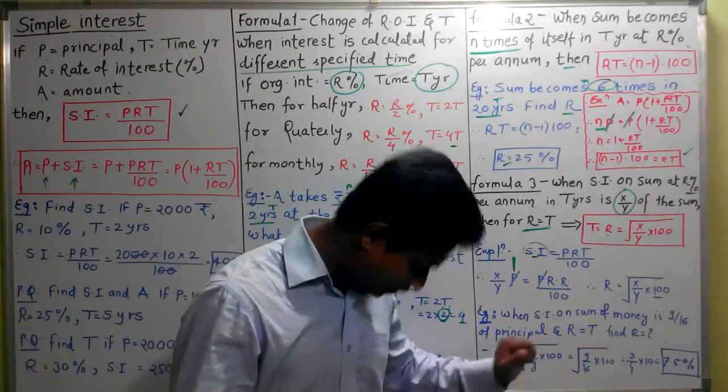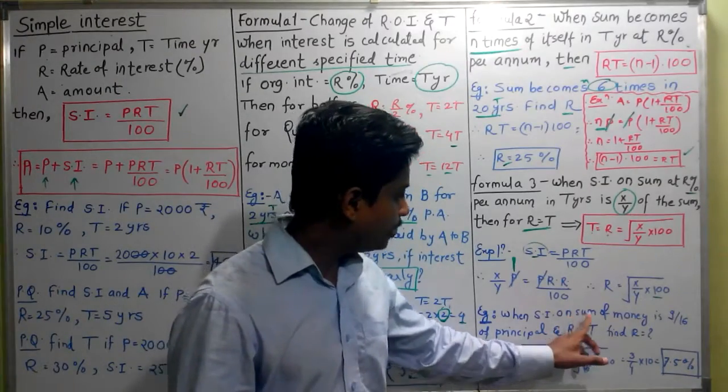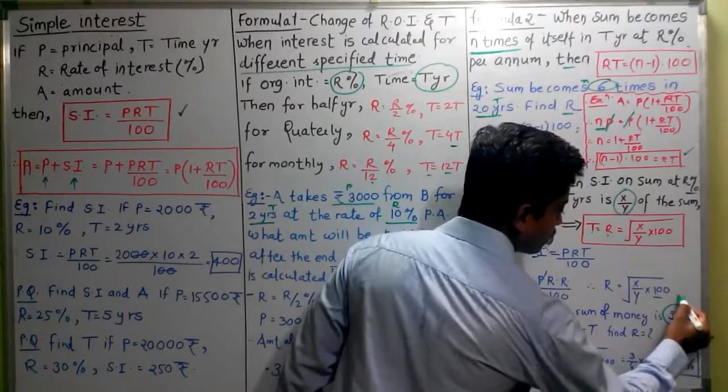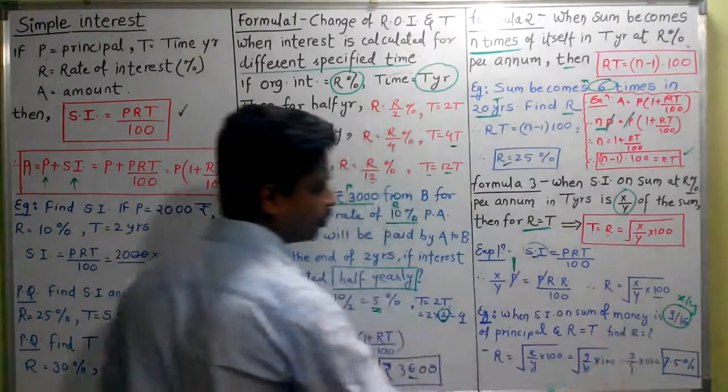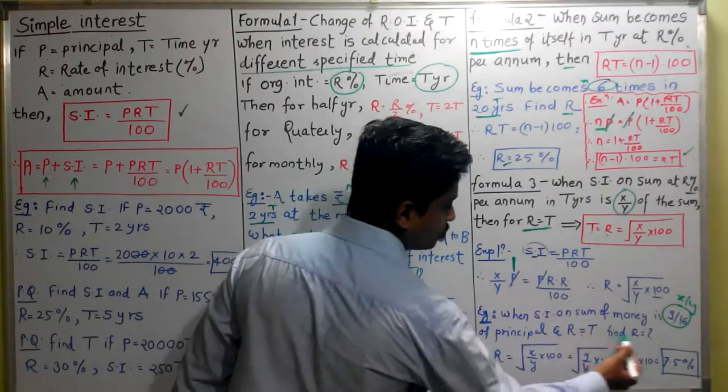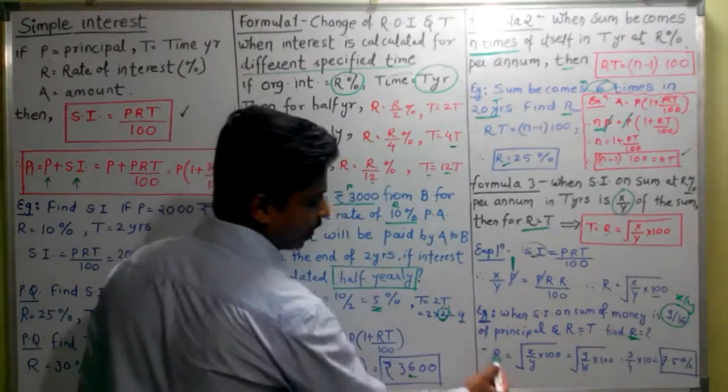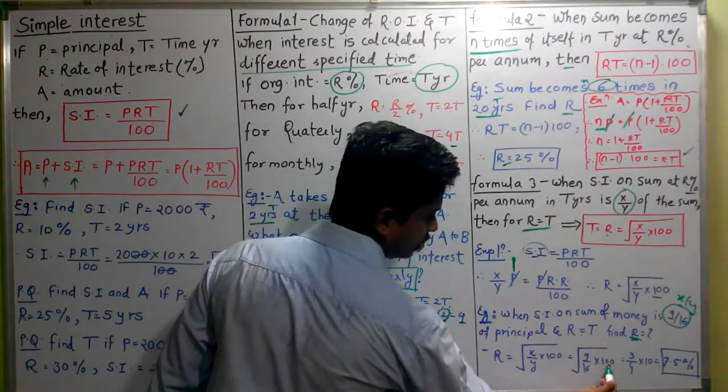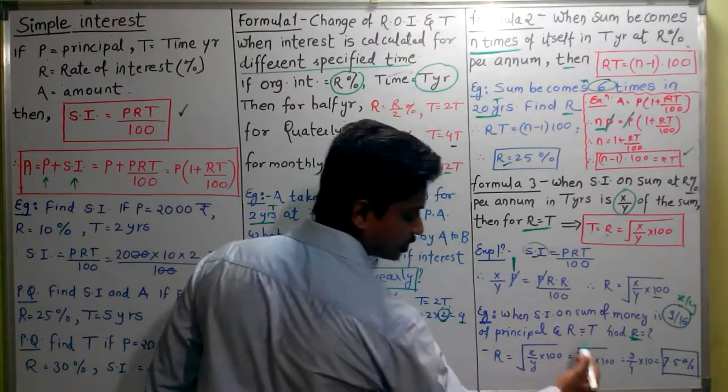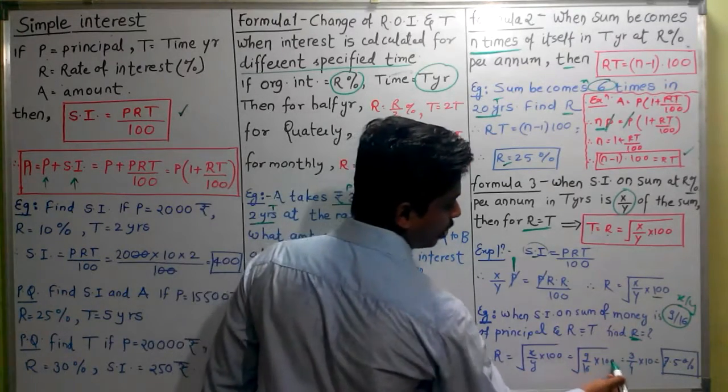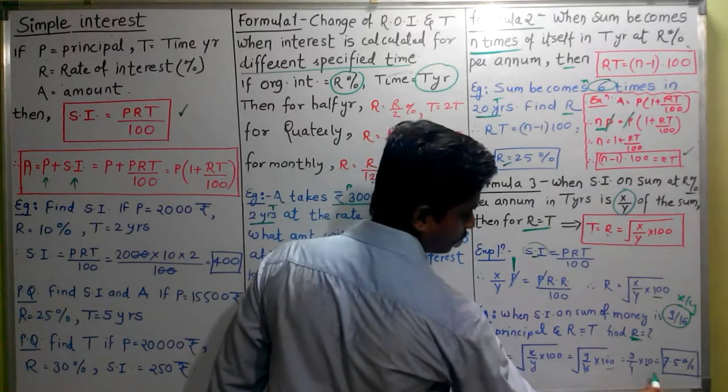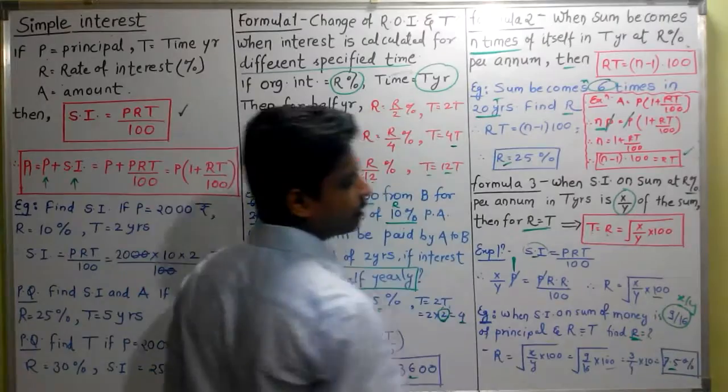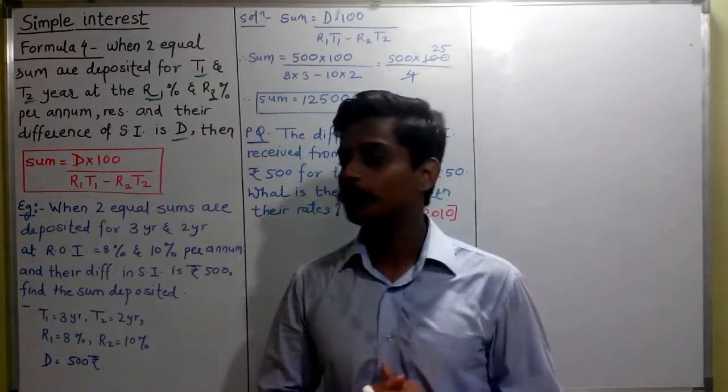Example: When simple interest on sum of money is 9 by 16 of principal and R equal to T, then find R. So R equal to square root of (x upon y) into 100, which is equal to square root of (9 upon 16) into 100. 9 upon 16 square root is 3 upon 4. 100 square root is 10. So 30 upon 4, that is equal to 75%.